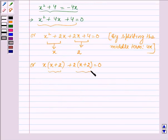Taking (x plus 2) common from both terms, we get (x plus 2) times (x plus 2) equals 0.